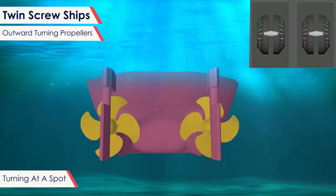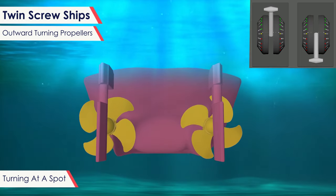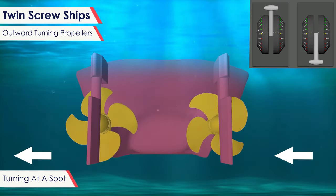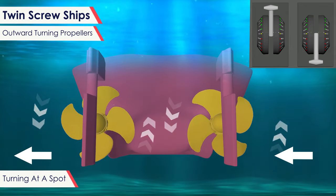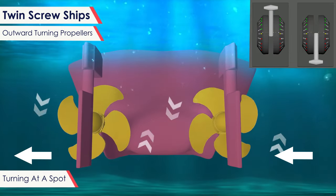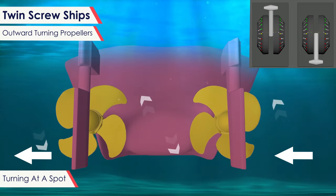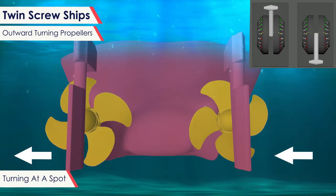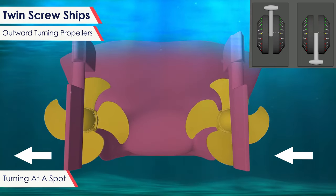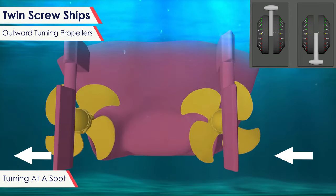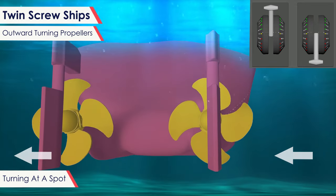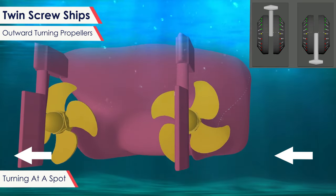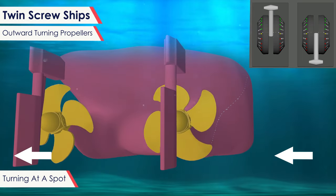For example, if we had to turn the ship on a spot, we can run one engine ahead and another astern. The counter thrust created by the propeller thrust will result in a turning movement. The transverse thrust created by the outward turning propeller complements the propeller thrust. If the ship intends to make a starboard spot turn, she will put her starboard engine to astern and port engine ahead, thus creating a rotational movement towards starboard. The transverse thrust created by both starboard and port engines will walk the stern towards port, thereby complementing the rotational thrust created by split engines.